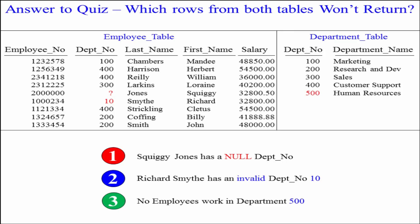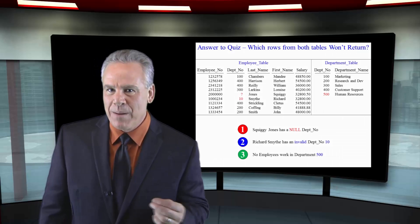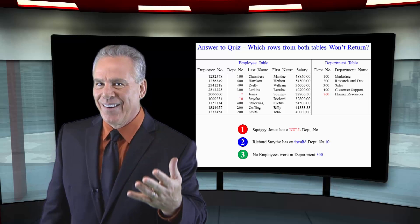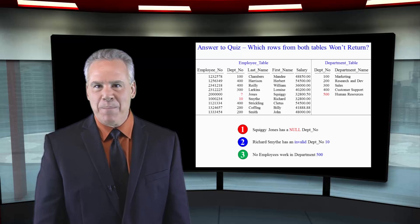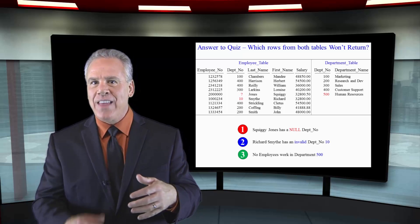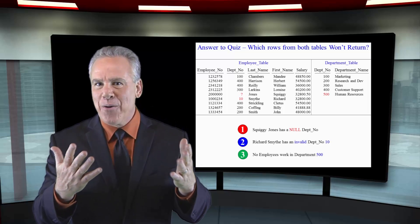Second, Richard Smythe didn't come back. He's in department 10 and there is no department 10 in the department table — it's probably supposed to be 100 but there was an error, so Richard Smythe is not coming back. And guess who else isn't coming back? Human Resources. They're department 500 in the department table, yet there are no employees in the employee table in department 500. So when these two tables are joined together on department number, those three rows will not come back in an inner join, and that's why we have something called an outer join.